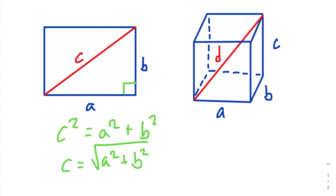Now we're ready to find the length of this diagonal. To do that, first we're going to draw a diagonal from this point right here to this point right here. So this is not a space diagonal we just drew because it's on the same face.